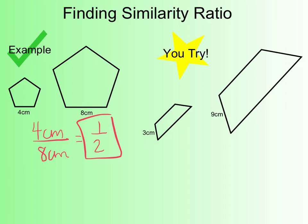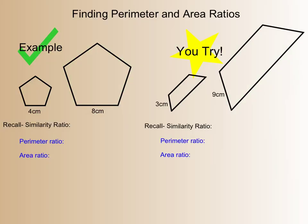We're going to move on to finding perimeter and area ratios. The first thing we have to do is find our similarity ratio, which we just did: 1 over 2.